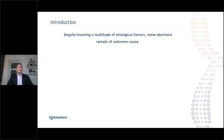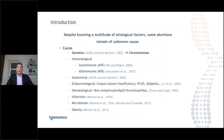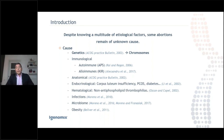Despite knowing a multitude of etiological factors, some abortions remain of unknown cause. We know different causes that could be genetic, immunological — either autoimmune with the antiphospholipid syndrome or alloimmune with the killer immunoglobulin receptors — anatomical, endocrinological like corpus luteum insufficiency, PCOS, or poor diabetes management. Also hematological with non-antiphospholipid thrombophilias, infections like chronic endometritis or pathogens such as Gardnerella, Prevotella, or Atopobium, and problems with the endometrial microbiome, or even obesity. But I'm going to focus on the part most interesting for us: the chromosomes.